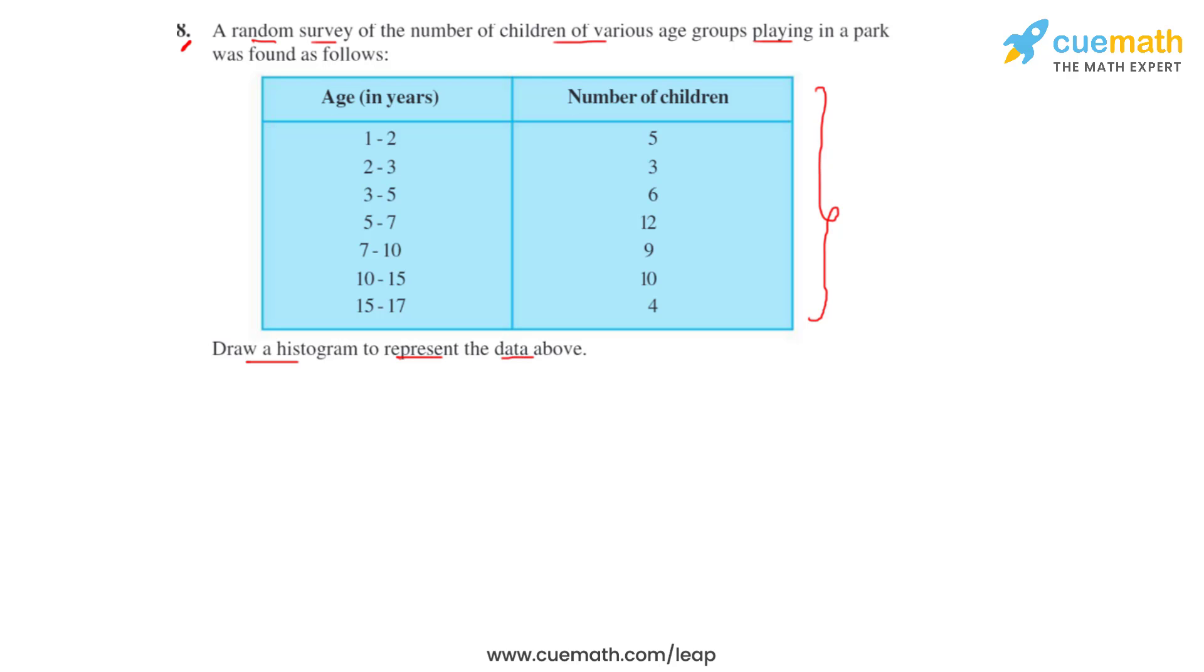From the given data we can observe that the class intervals have got varying widths. The first class interval has got a width of 1, the third class interval has got a width of 2, and the fifth class interval has got a width of 3. So these varying widths will make the rectangular bars have varying widths in the graph and that will give us a misleading picture of the data.